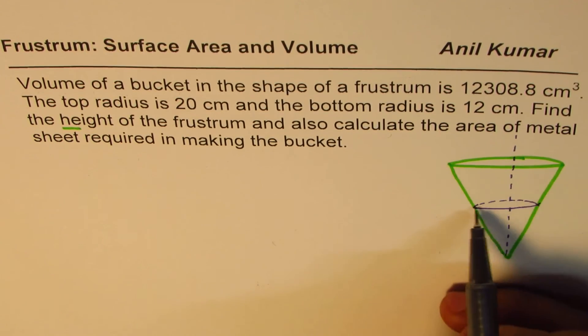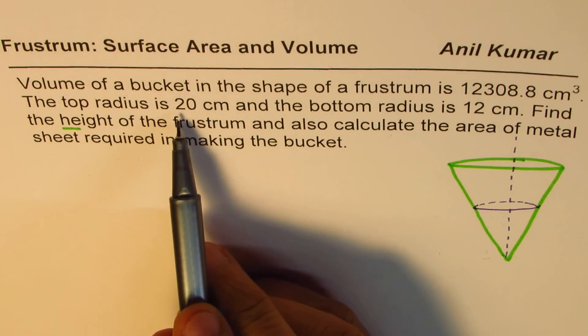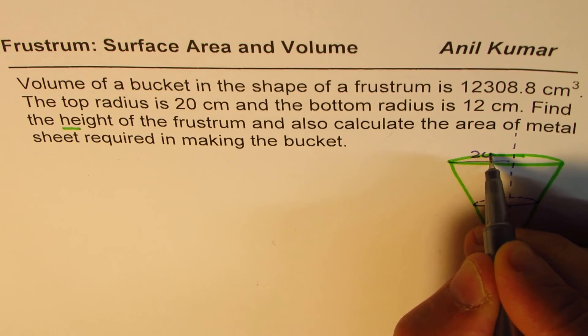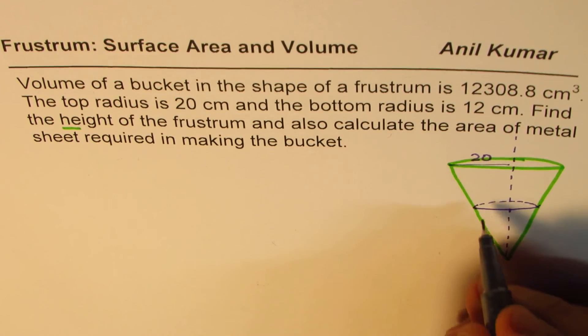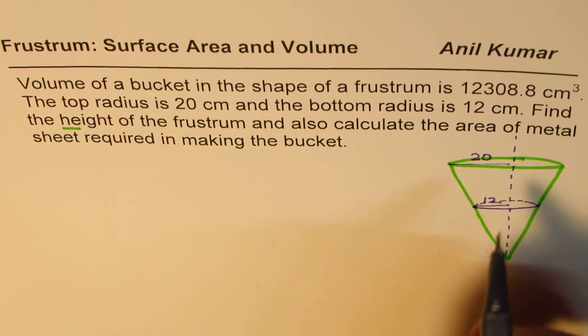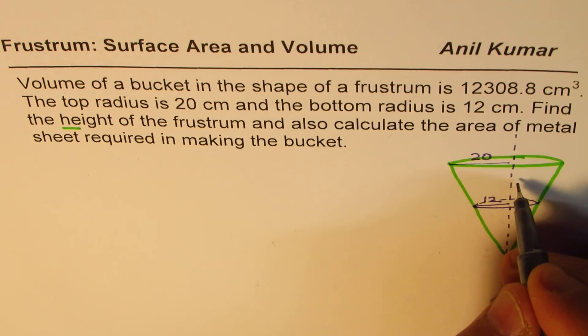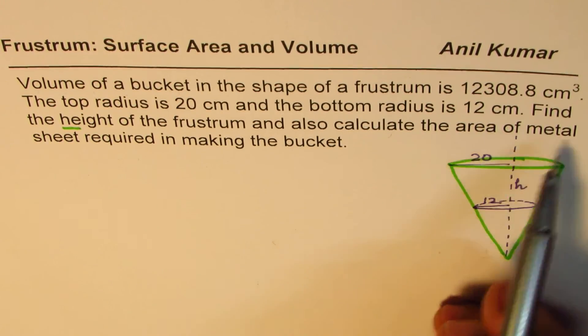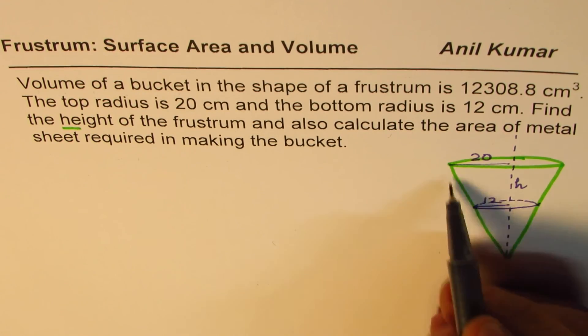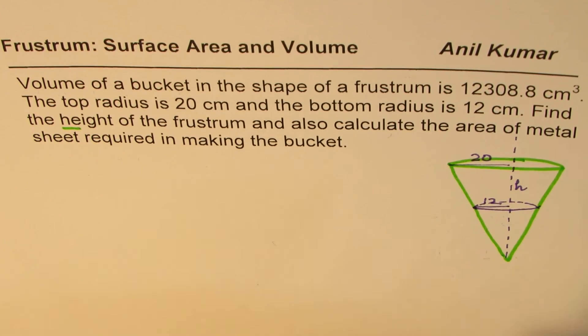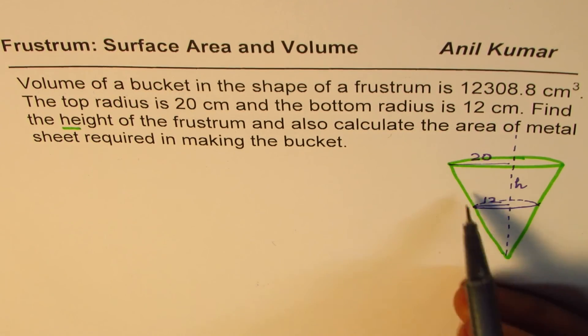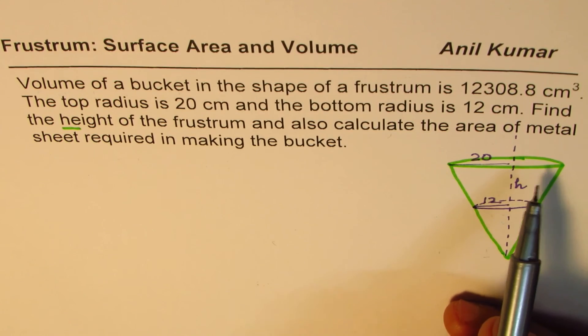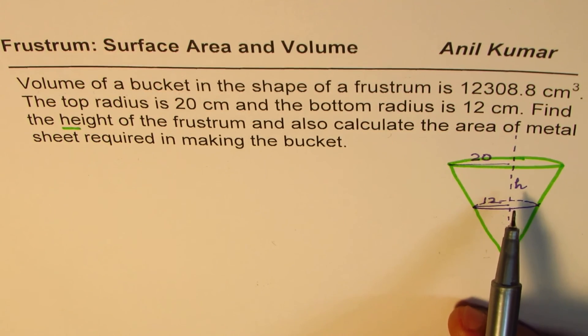Let me make the axis here and complete this diagram. The top radius is 20 centimeters, so this part is 20 centimeters. The bottom is 12, from here to here it is 12. We have to find this height. The metal sheet will be the outside surface area, including the bottom. That surface area calculation we'll take up in the next video. Now I understand that we need to find height, and that is part one of this video.